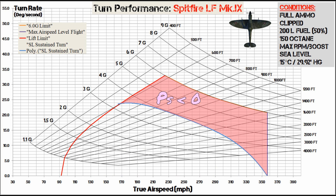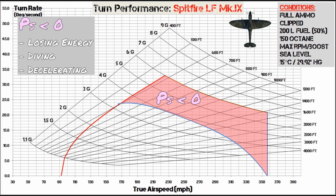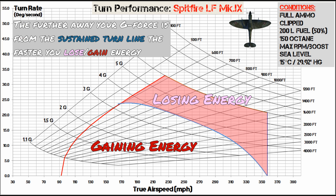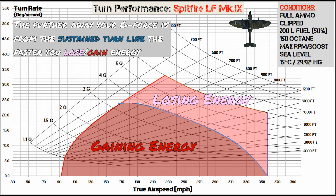Above the sustained turn line is a region where your specific excess power is less than zero, meaning you're losing energy — this is a region where you only get instantaneous performance. In order to maintain your performance in this region, you need to sacrifice altitude and energy. The further your G-force is from the sustained turn line, the faster you're going to lose or gain that energy.